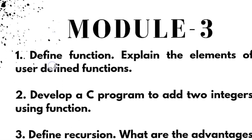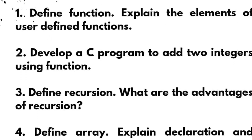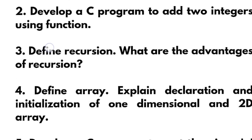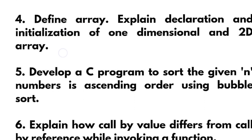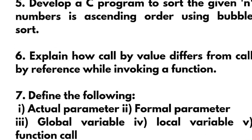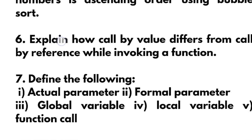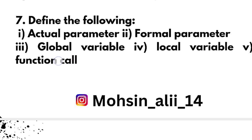Next is module three. Define function and explain the elements of user-defined functions. Develop a C program to add two integers using a function. Define recursion and explain the advantages of recursion. Define array and explain the declaration and initialization of 1D and 2D arrays. Next, develop a C program to sort the given N numbers in ascending order using bubble sort. Explain how call by value differs from call by reference while invoking a function. Also cover small definitions like actual parameter, formal parameter, global variable, local variable, and function call.